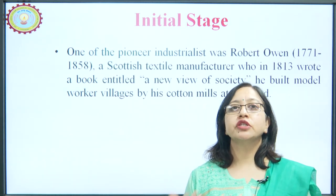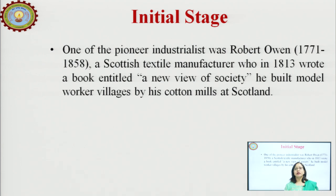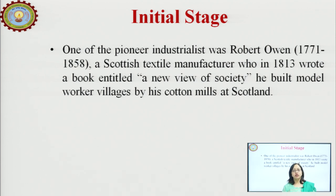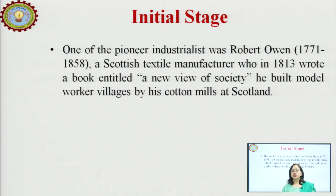When we talk about the initial changes, one of the pioneer industrialists was Robert Owen, a Scottish textile manufacturer who in 1813 wrote a book entitled A New View of Society. He built model worker villages by his cotton mills in Scotland. Robert Owen was not only a great industrialist but also a philanthropist and social reformer whose purpose was not merely to earn profits, but also to look into the working conditions of workers.